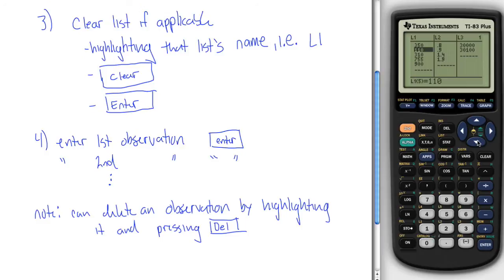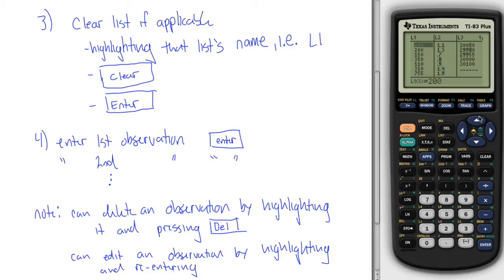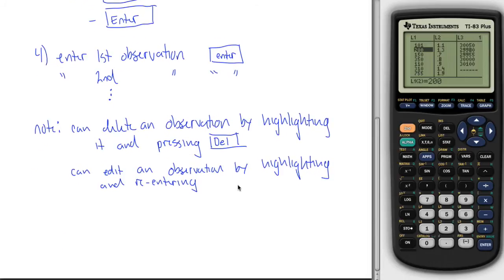And then one other thing you can do if you want to change any of these, you can just highlight them and type the number in on top of it and change it. So you can edit an observation by highlighting and re-typing, maybe re-entering. So, for example, maybe my first observation that I put in all the way on top here, 100. That was supposed to be 101. Just highlight it, type in 101, hit enter, you're good, now it changes to 101.